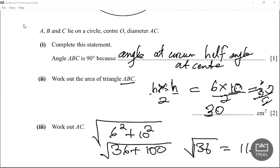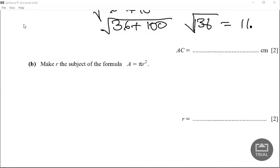This one says make r the subject of the formula, and that is worth two marks. We say area is equal to pi r squared, that's the area of a circle. We want to make r the subject, so what we do, we're going to get rid of the square and the pi. So let's get rid of the pi first by dividing by pi.